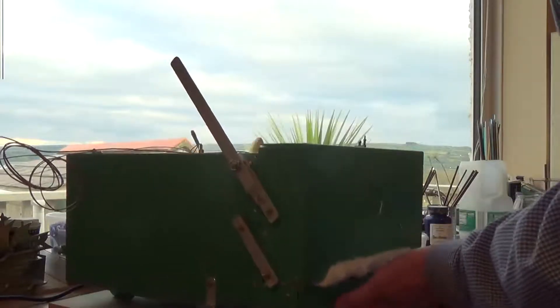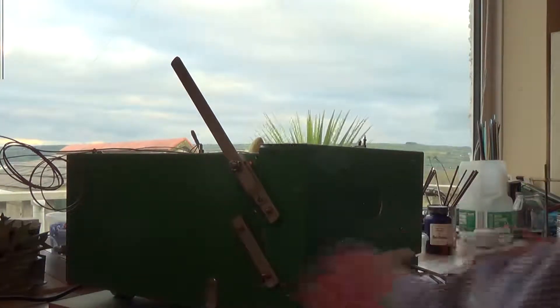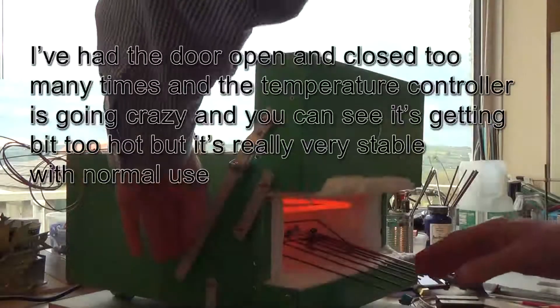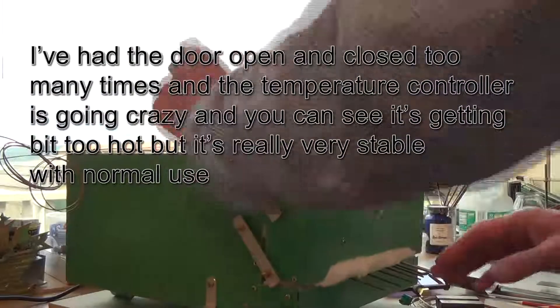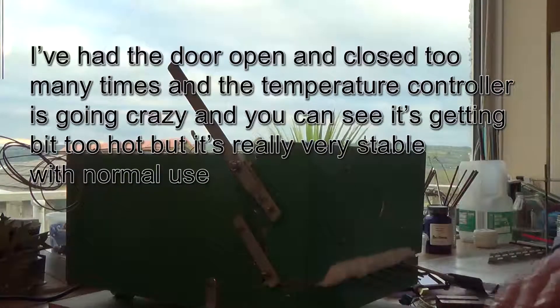That lowers the whole thing and now the rods are pointing slightly downhill, but that's not a problem for the mandrels. Now the bed of the kiln is horizontal, so for glass fusing that's fine.